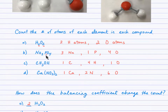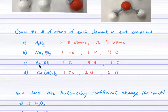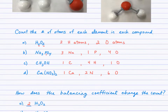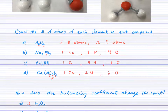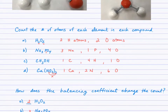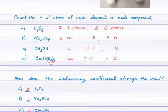For Na3PO4, I filled in the implied subscript of 1 for P, giving us 3 Na, 1 P, and 4 O. For the next compound we have 1 carbon, 3 H's plus 1 more makes 4 total, and 1 oxygen. For Ca(NO3)2, we have 1 calcium; the 2 outside the brackets multiplies everything inside: 2 times 1 gives 2 nitrogen, and 2 times 3 gives 6 oxygen. Being able to count the number of atoms of each element in a compound is a very important basic skill for balancing.